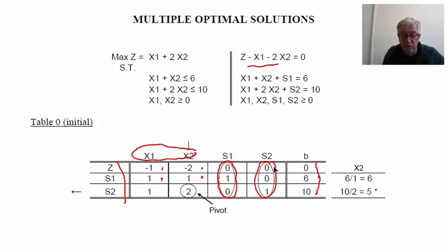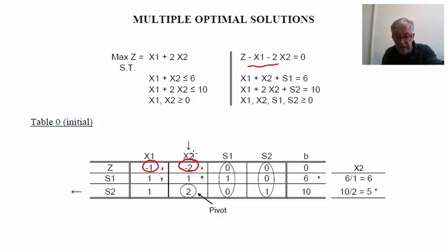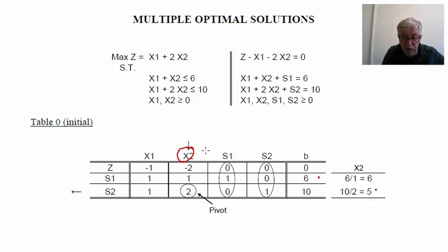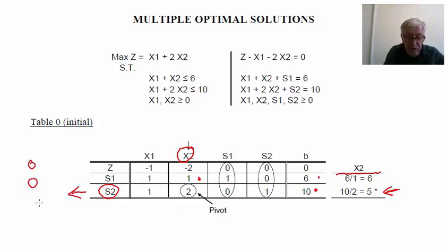The solution is not optimal because we have negative coefficients in the z row. The highest partial derivative corresponds to x2, so we introduce x2 into the base. To identify which variable leaves, we divide: 6 divided by 1 gives 6, and 10 divided by 2 gives 5. We select the minimum value of 5, so s2 must leave the base. The column of x2 must be transformed into 0, 0, 1. The pivot element is identified, and our first task is to divide the third line by 2.